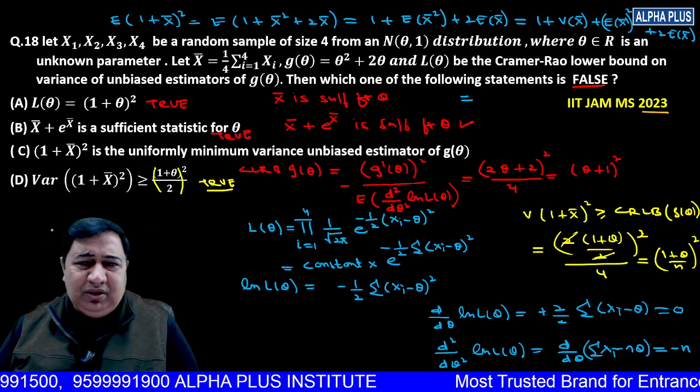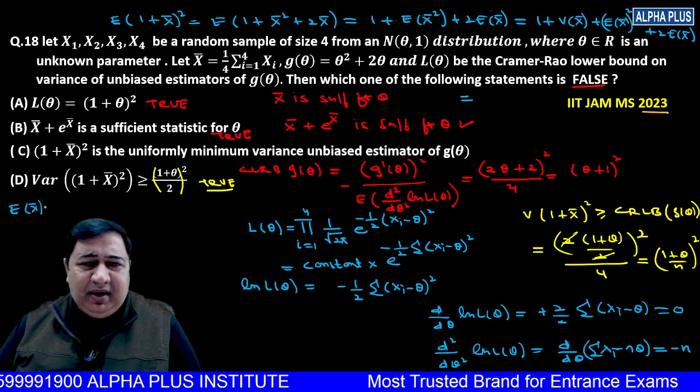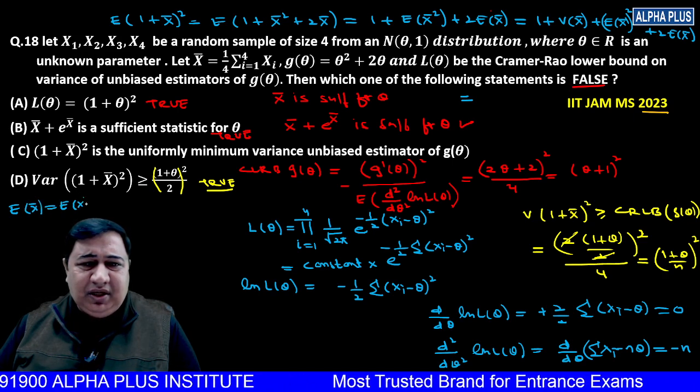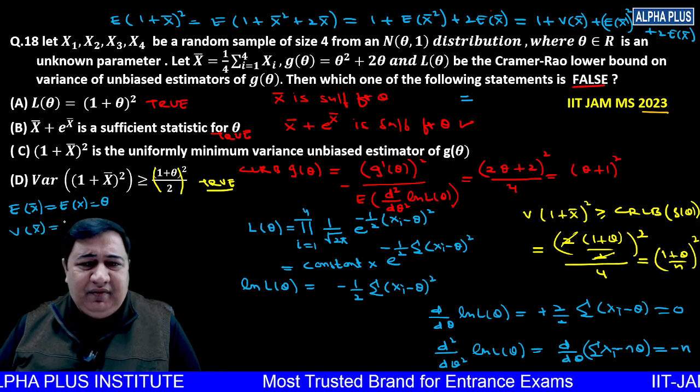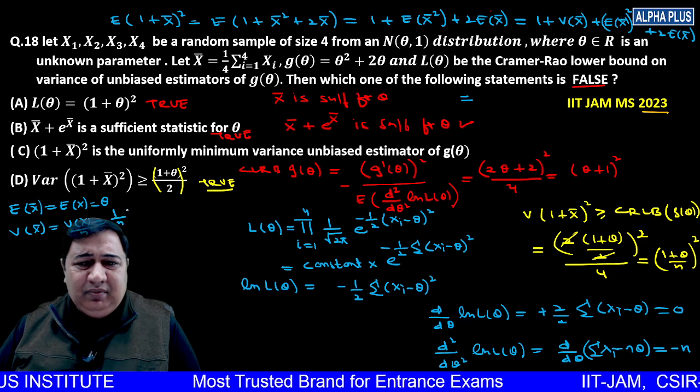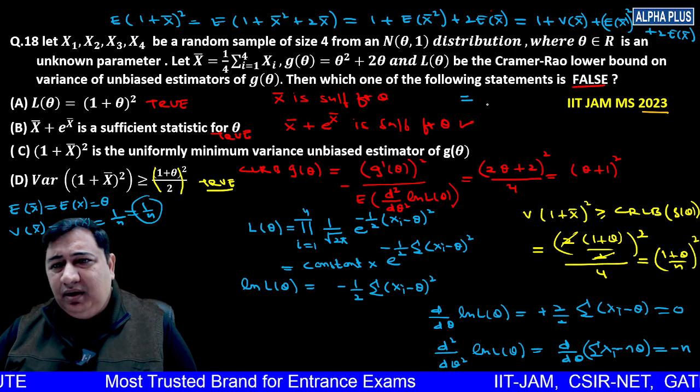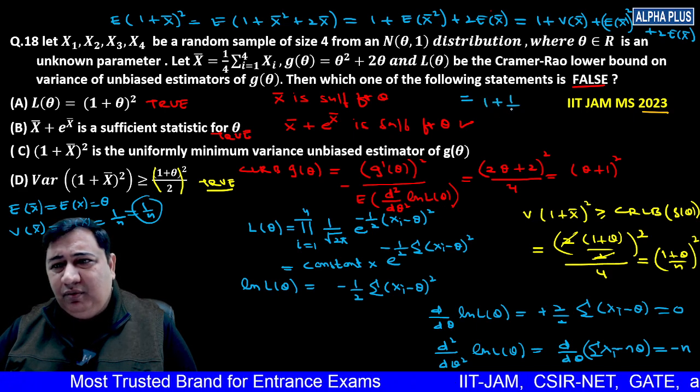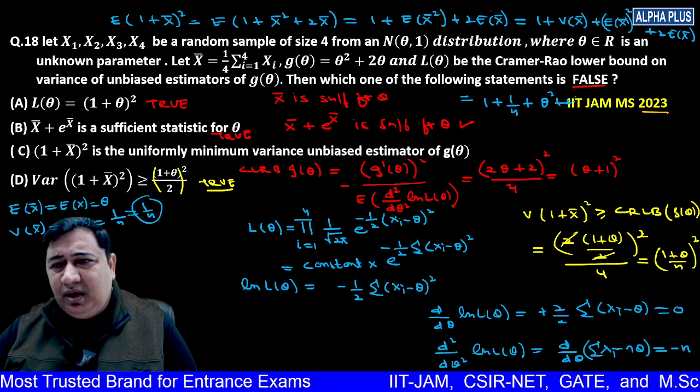Remember students, expectation of X-bar is same as expectation of X, which is theta. And variance of X-bar is variance of X by n, which is one by n, which is one by four actually. So we get: one plus one by four plus expectation of X-bar squared, which is theta squared, plus two theta.